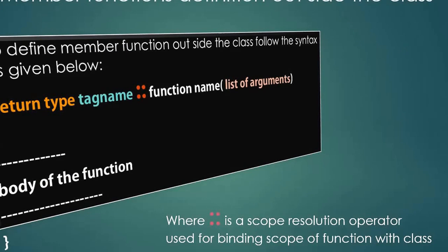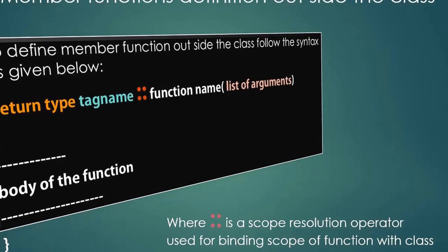Now we look at member function definitions outside the class. The syntax is: the return type of the function, followed by the tag name (class name), then the scope resolution operator (::), then the name of the function and list of arguments, followed by the body of the function. The scope resolution operator is used for binding the scope of the class with the function.